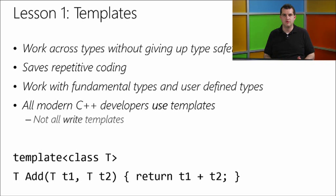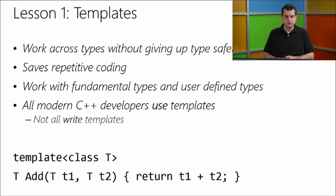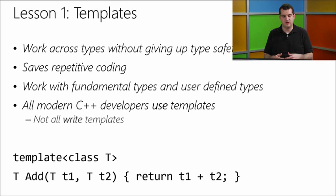We saw before how you can get polymorphism by using inheritance — you can derive from a base class and use virtual functions. Templates provide a way of getting what's called compile-time polymorphism. They allow you to define a class or a function that operates on different kinds of types. For example, here in this slide we have a function template called `add`. This template is instantiable with any type T — it takes two T's as arguments and adds them together.